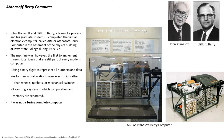John Atanasoff and Clifford Berry, a team of a professor and his graduate student, completed the first all-electronic computer called ABC or Atanasoff-Berry Computer in the basement of the physics building at Iowa State College during 1939–42. The machine was the first to implement three critical ideas still part of every modern computer: using binary digits to represent all numbers and data, performing all calculations using electronics rather than wheels, ratchets, or mechanical switches, and organizing a system in which computation and memory are separated. However, the machine was not a Turing-complete computer.